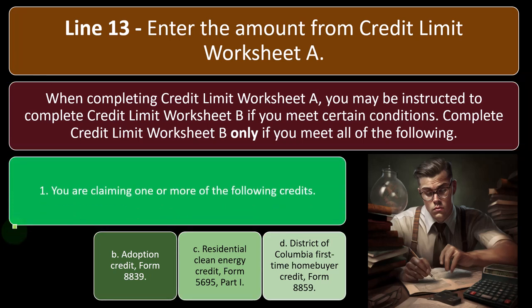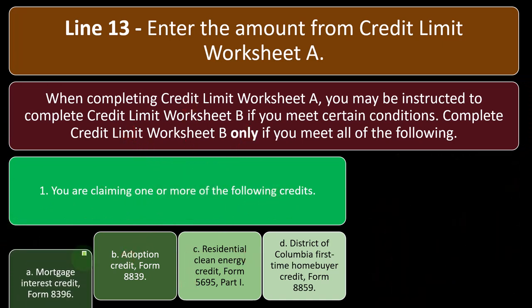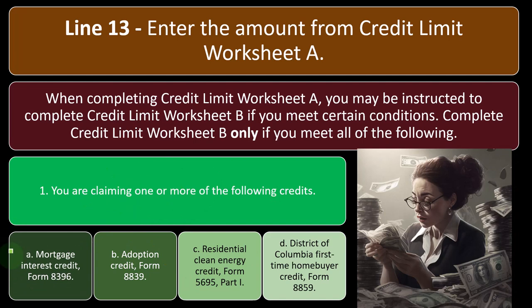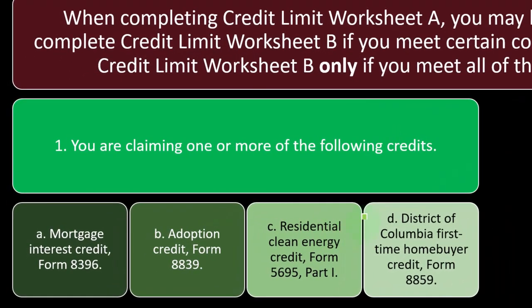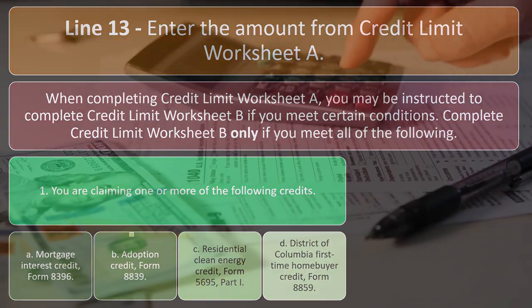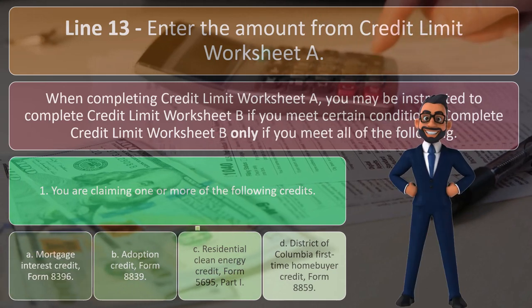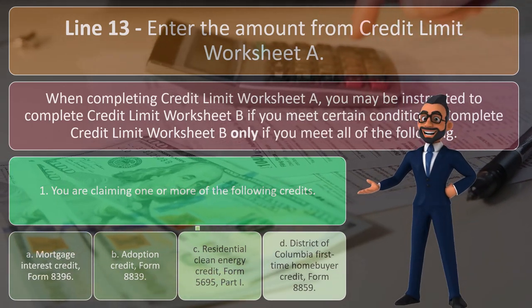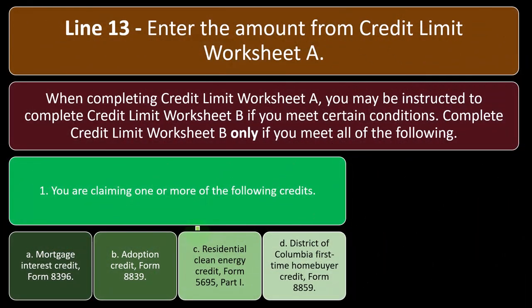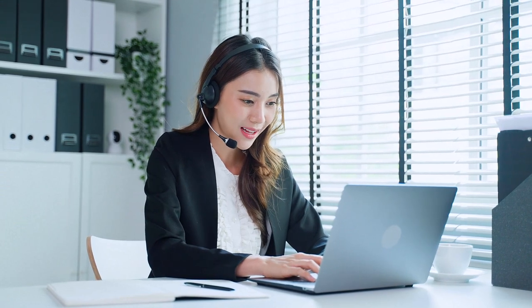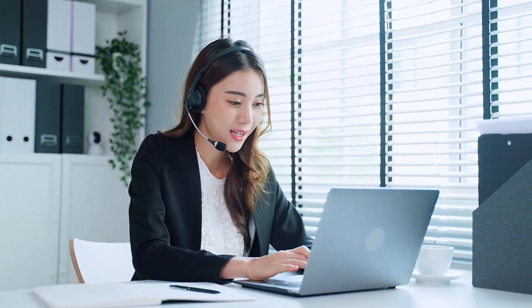Condition one: you are claiming one or more of the following credits — A) mortgage interest credit, Form 8396; B) adoption credit, Form 8839; C) residential clean energy credit, Form 5695, Part 1; D) District of Columbia first-time home buyer credit, Form 8859. These are more unusual situations that could complicate the calculation, possibly involving modified AGI adjustments. Tax software is helpful here because, if data is input properly, it can pick up those changes — and you can double-check by deconstructing to verify everything is properly done. Condition two: you are not filing Form 2555. Condition three: line four of Schedule 8812 is more than zero.